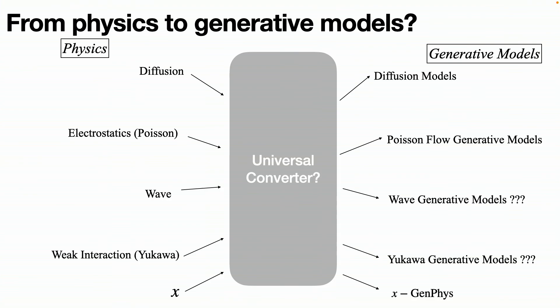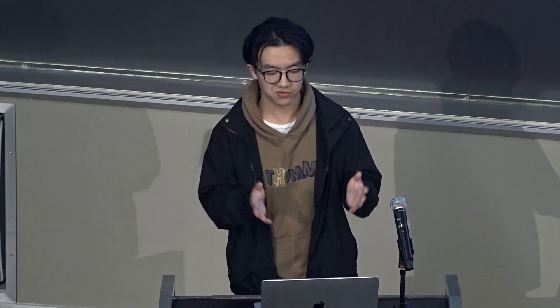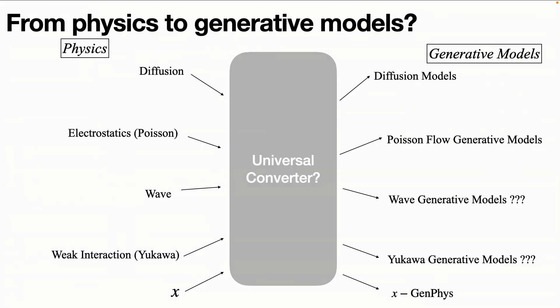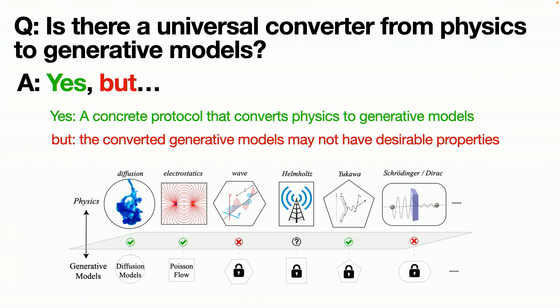So here's a general question. Is there a magic box, which I call a universal converter, that you just put in any physical processes or any physical equation, and it will automatically output a generative model? So we put in diffusion equation, output diffusion model, we input Poisson equation, output Poisson flow, we input wave equation, you can output wave generative models, we put in some x equation, output the corresponding generative model. Does there exist such a universal converter?